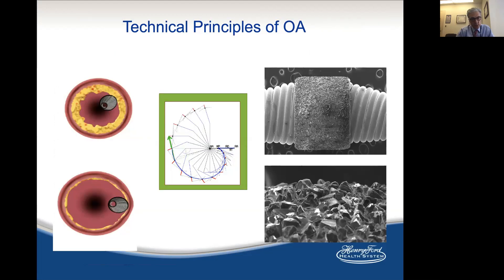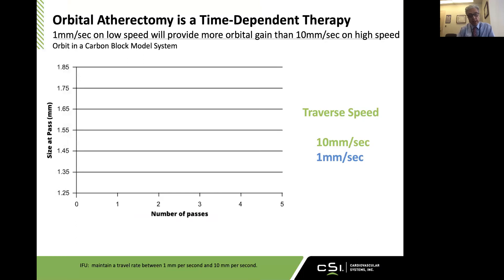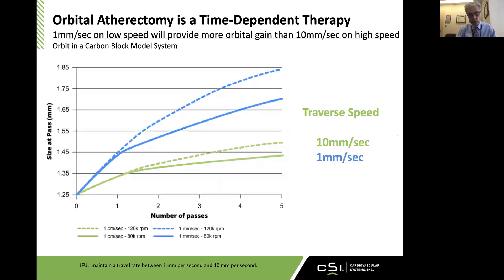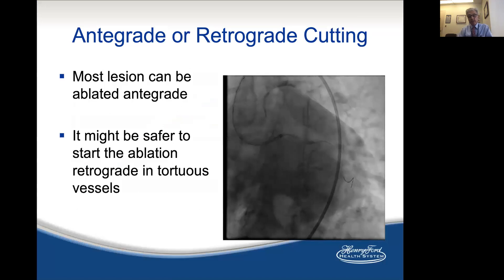Technical principles: it is an orbital atherectomy. Because of the centrifugal forces and two speeds of rotation, the crown will orbit around the vessel and cause ablation. The most important point when using orbital atherectomy is to advance and retract the crown slowly — you perform cutting in and cutting out. Slow advancement and slow retraction is key because it allows the crown to achieve more orbit. At 80,000 and 120,000 RPM, advancing at one millimeter per second versus one centimeter per second — going slow achieves a bigger orbit and more efficient and effective ablation.